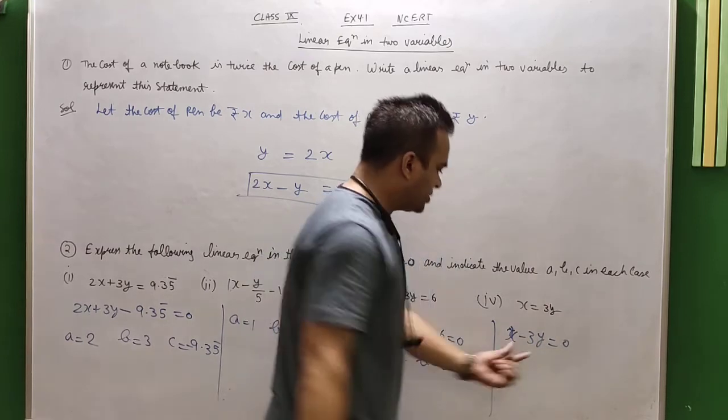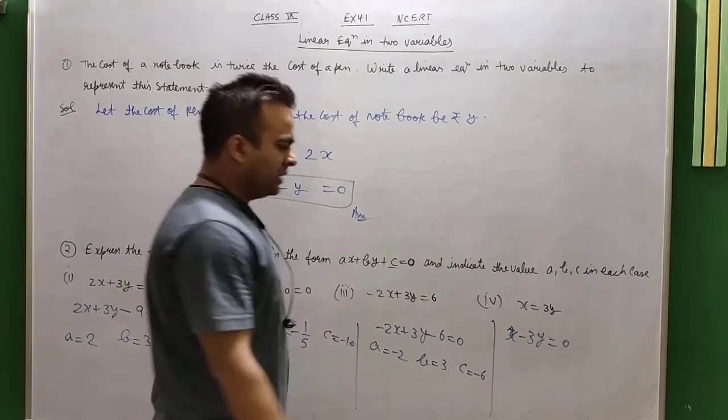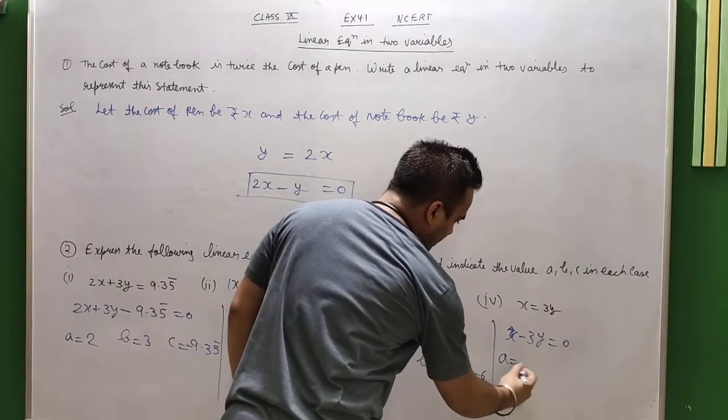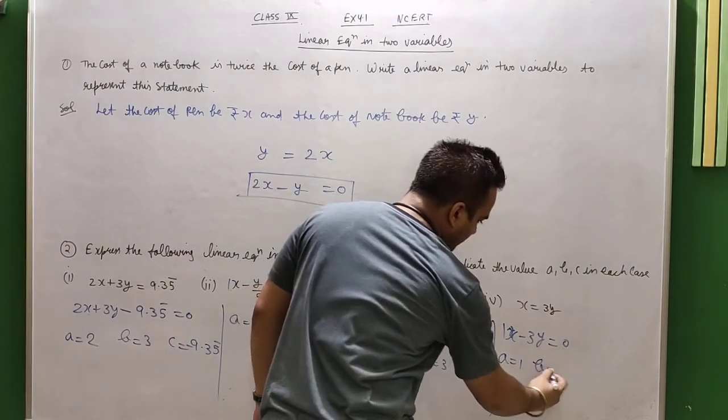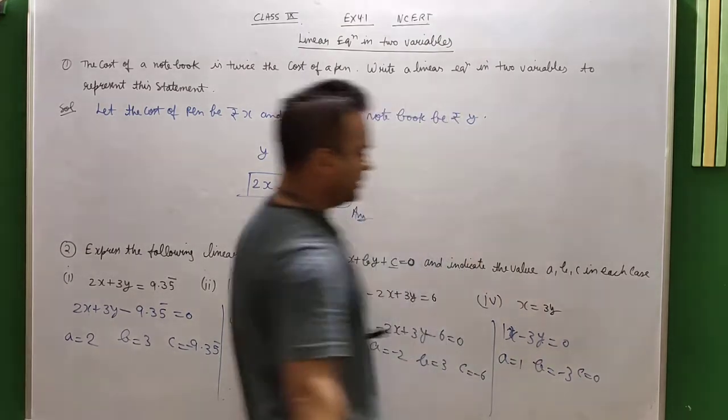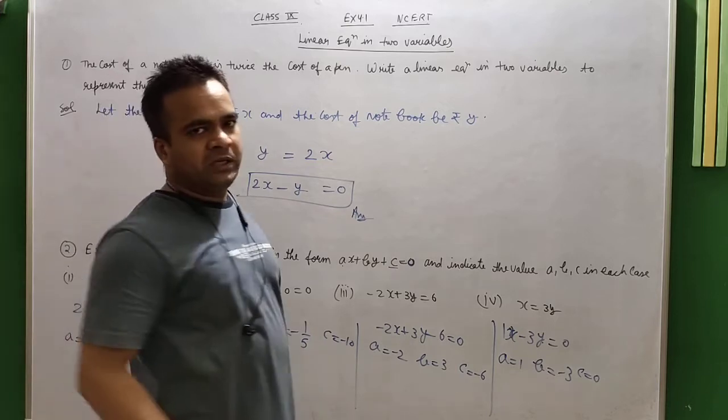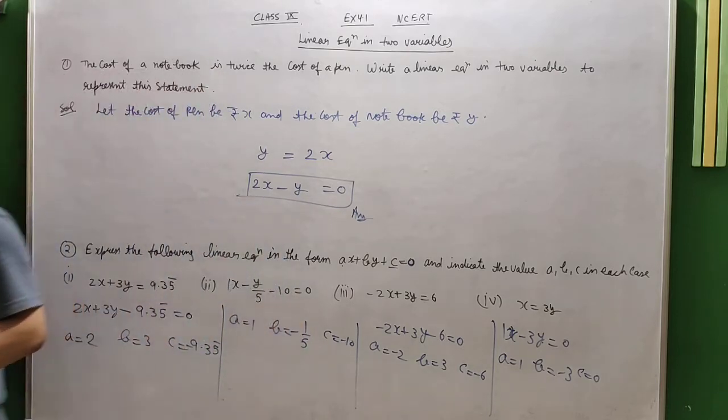Now let's talk about this equation. This equation is clear that c is missing. What is c? It's 0. x minus 3y equals 0, so a value is 1, b is minus 3, c is 0, because c is missing. So this equation has c equal to 0. These are 4 parts.